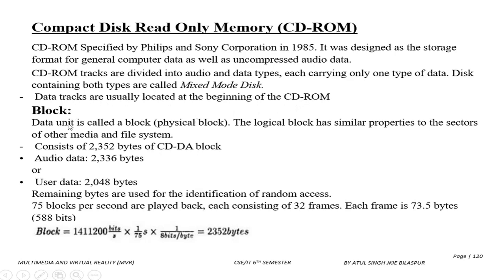The data unit is called a block. The logical block has similar properties to the sector of other media and file systems. A block consists of 2352 bytes in total. Of these, 2336 bytes are audio data, 2048 bytes are user data, and the remaining bytes are used for identification, random access, and error detection code.